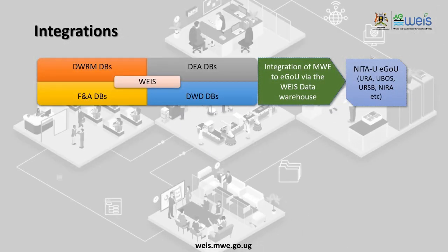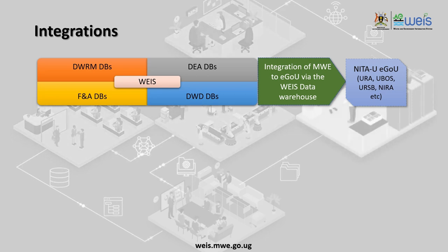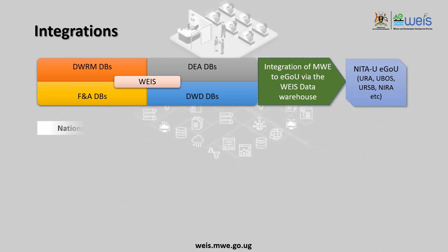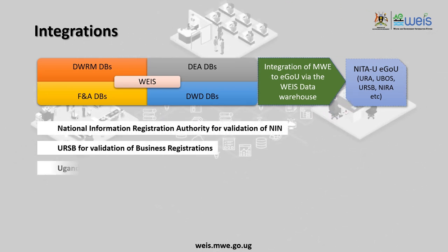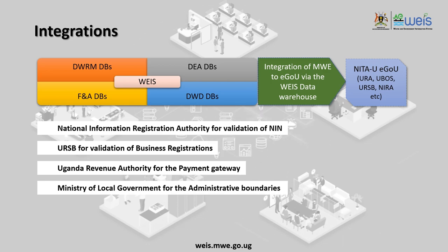The WEEZ Data Warehouse integrates with the E-Government UG Hub hosted by the National Information Technology Authority Uganda, facilitating exchange of common data from NERA, URSB, URA, and the Ministry of Local Government for administrative boundaries and other government agencies.